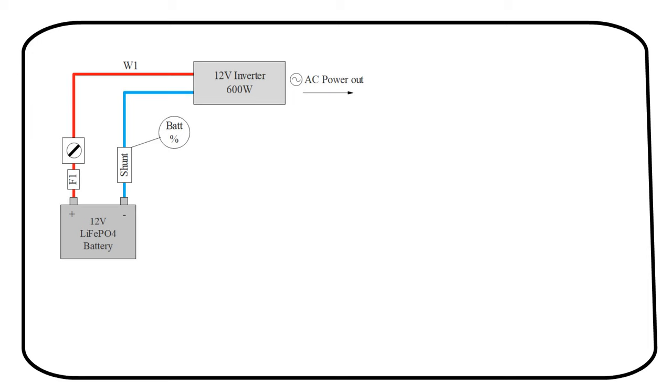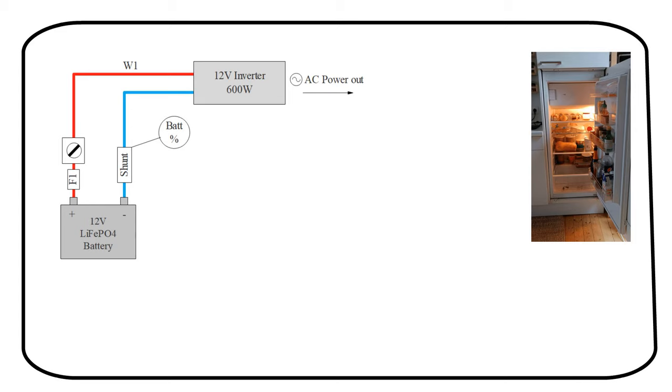I'm building an off-grid backup system for my fridge in case of a power outage. Here is a diagram. We have a 12 volt lithium battery with a 600 watt inverter. We have to calculate the current going through this wire. We divide the inverter power by the battery voltage. 600 watts divided by 12 volts equals 50 amps.